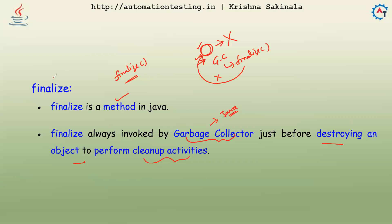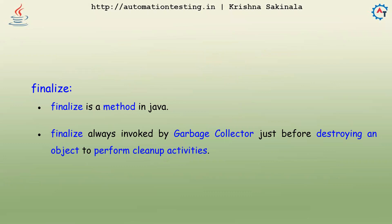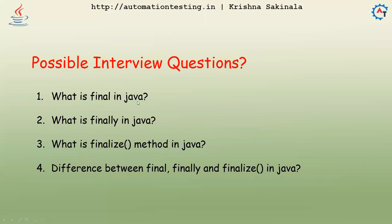So that is the difference between final, finally, and finalize. Frankly speaking, there is no real relation between these three — the names are just very similar, which is why people ask about the differences. Common interview questions include: what is final in Java, what is finally in Java, and what is the finalize method in Java. That's all for this video, thank you.